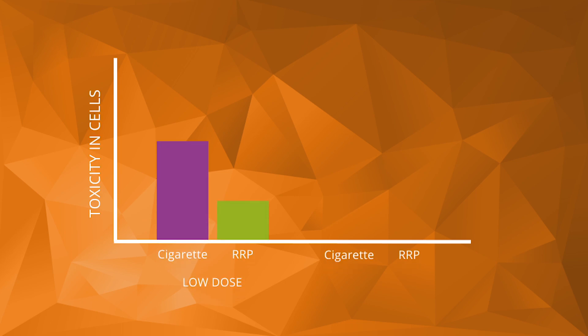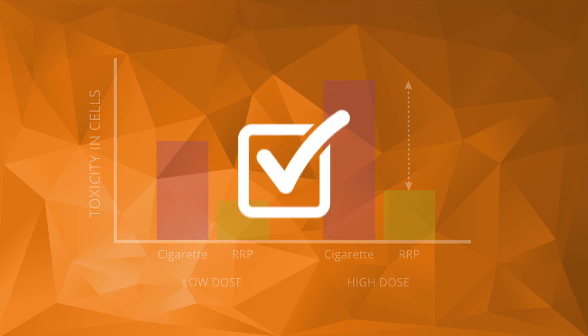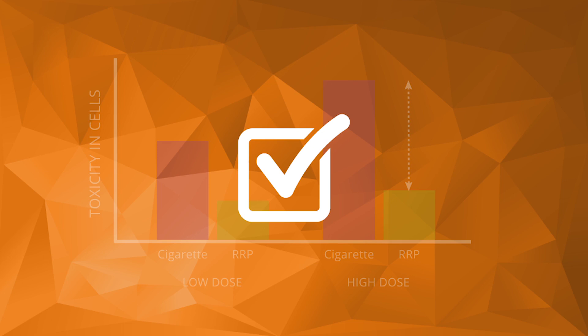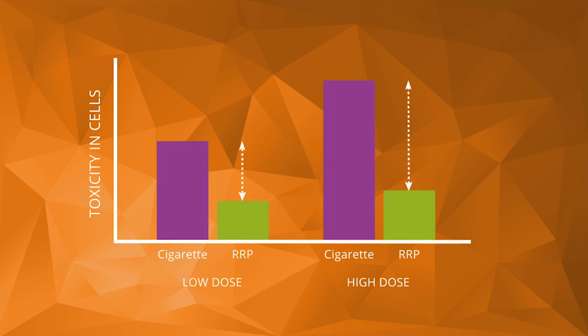We measure the toxicity of conventional cigarette smoke as well as from the aerosols from the IRPs. If a product shows reduced toxicity from our non-clinical assessment, it might mean that this product is safer. Nevertheless, the confirmation of this will come from very targeted clinical studies.